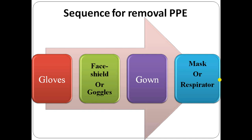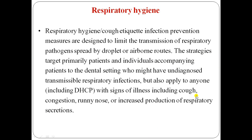The sequence for removing PPE is: first remove gloves, then face shield or goggles, then gown, and then mask or respirator.